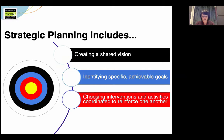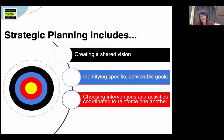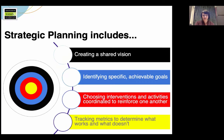Strategic planning also often involves thinking systemically — considering a set of initiatives that work in coordination with each other in a recruiting ecosystem. Keeping with that last example, it might make sense to develop welcoming events for students from your feeder high school, so they can make the connection between their high school computing courses and studying computing at your college. And as that example shows, tracking metrics to determine what works and what doesn't is amazingly helpful. NCWIT has many resources to help you with tracking these metrics, including surveys you can use in intro courses.